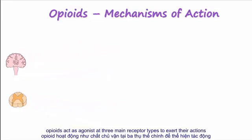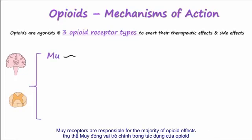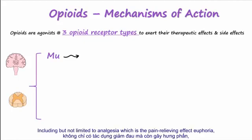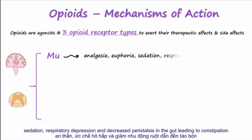Opioids act as agonists at three main receptor types to exert their actions. Mu receptors are responsible for the majority of opioid effects, including but not limited to analgesia, which is the pain-relieving effect, euphoria, sedation, respiratory depression, and decreased peristalsis in the gut, leading to constipation.